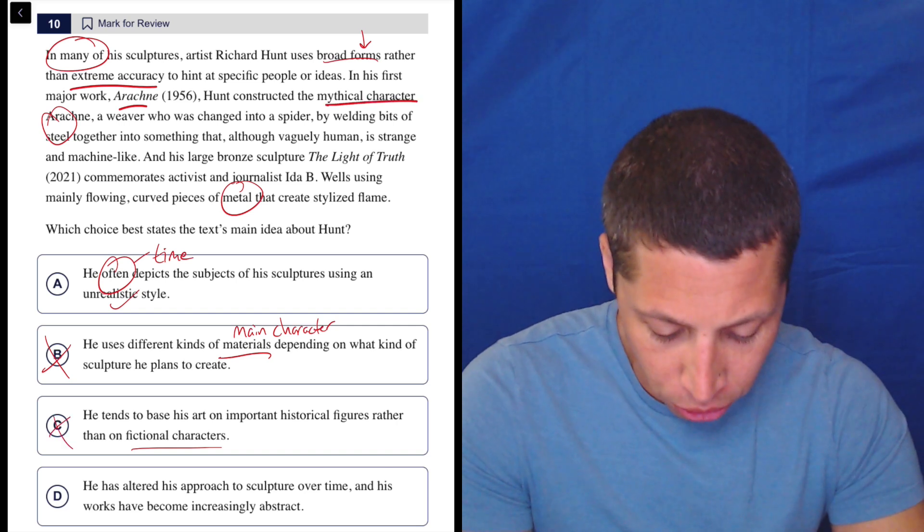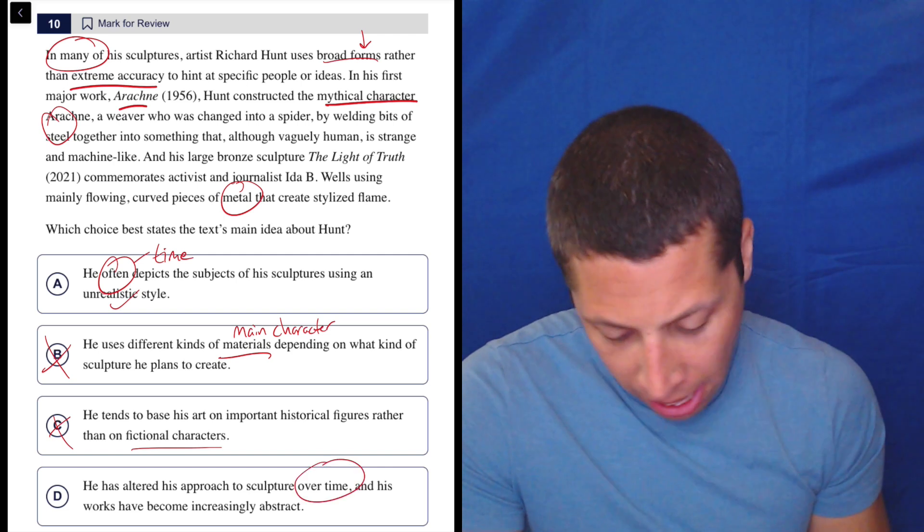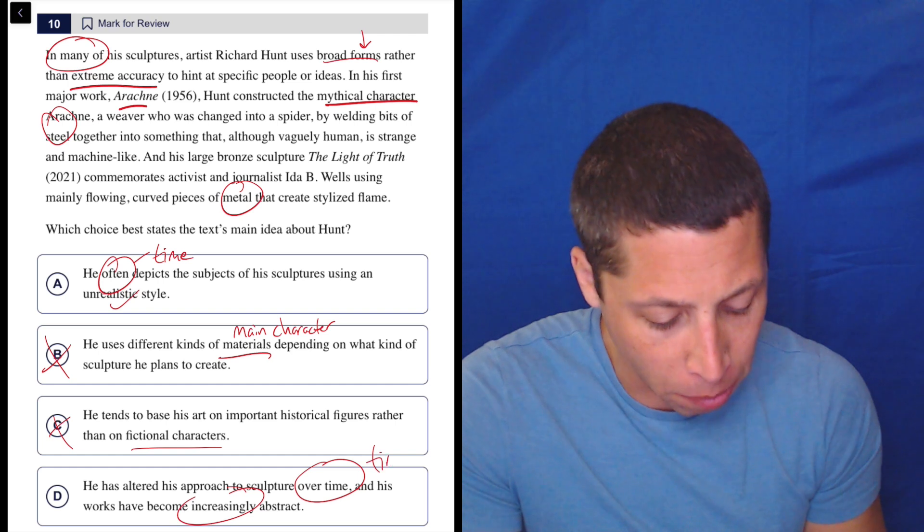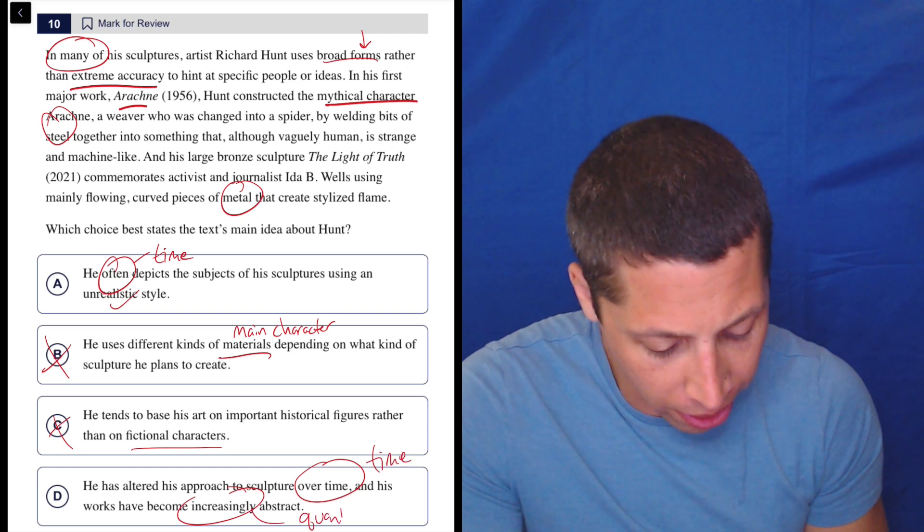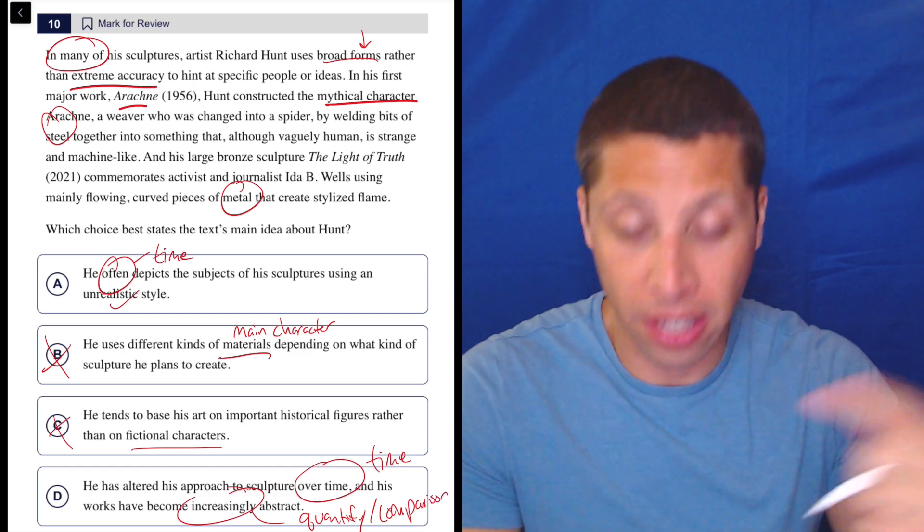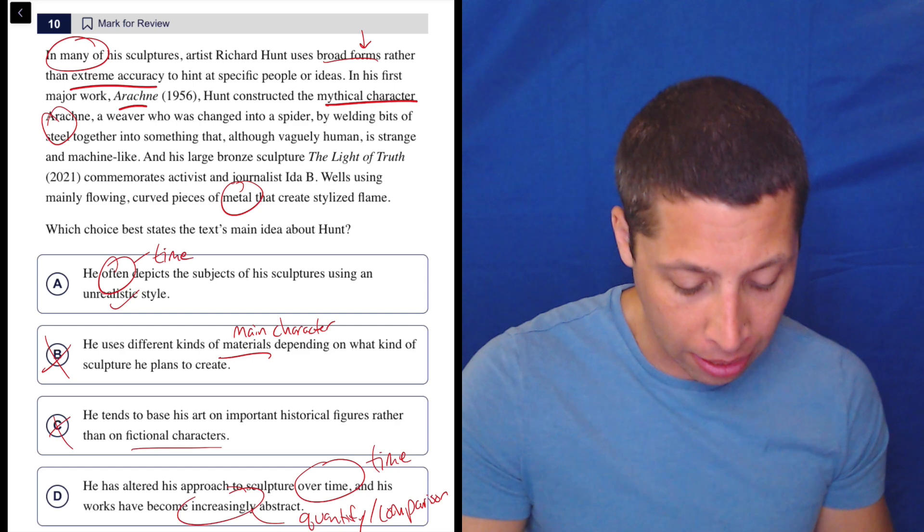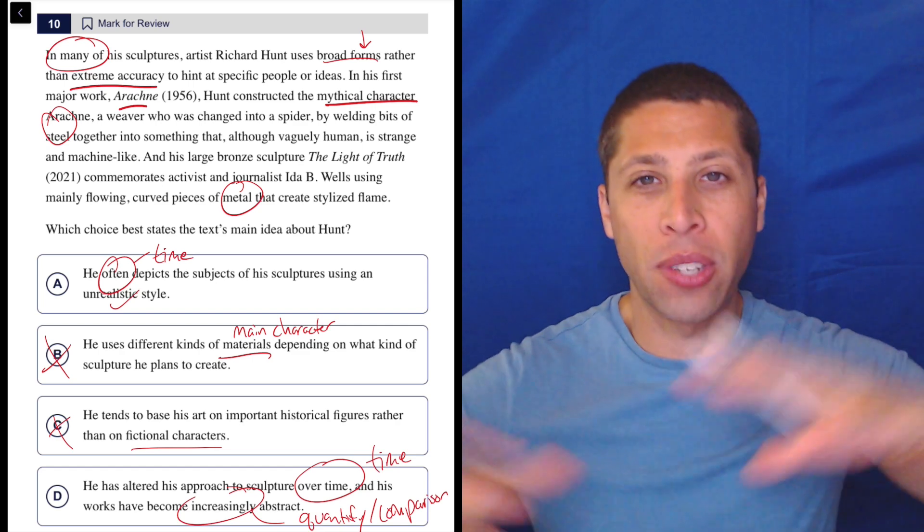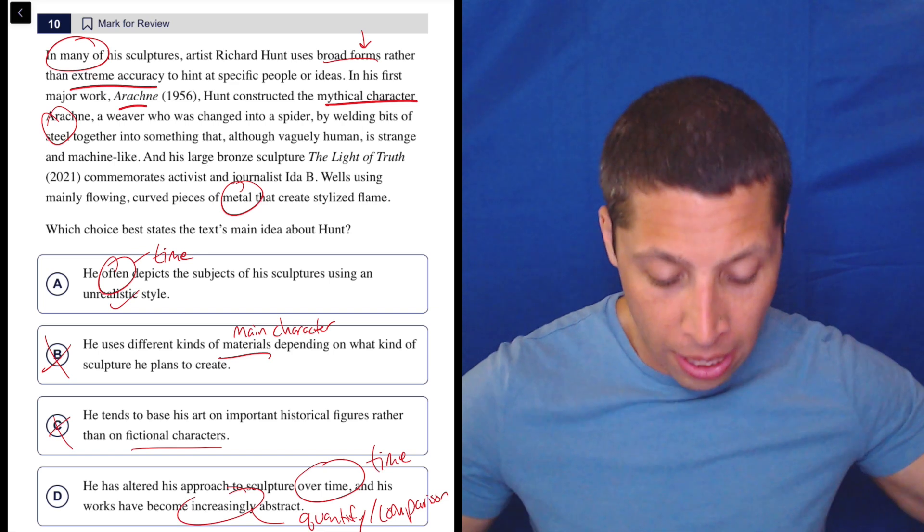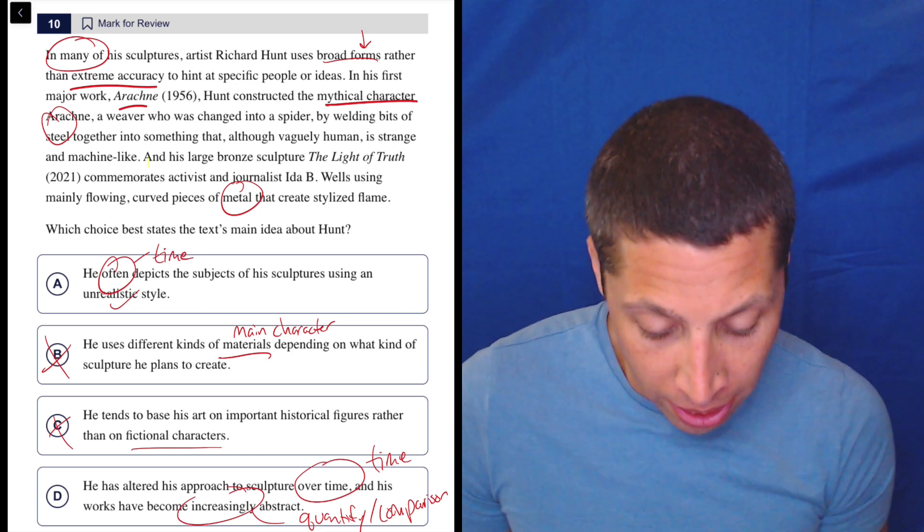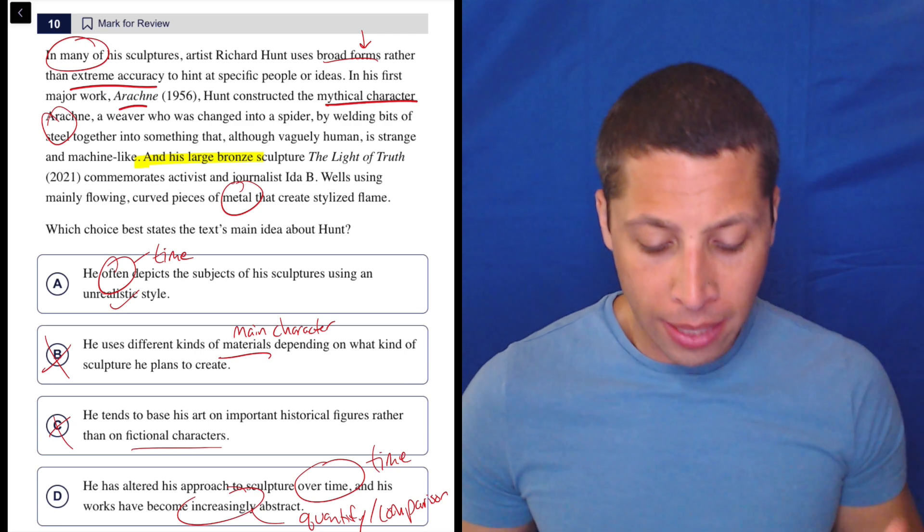D: He has altered his approach to sculpture over time, and his works have become increasingly abstract. So we have the problem of time, the problem of quantifying or even comparison here, right? We're giving two examples, 1956 and 2021, so time is passing. But are we making a comparison between those two things? Are we trying to say that they represent some broader shift in his work? I don't think so. I think they're just two examples, right? Even just look at the transition point here.